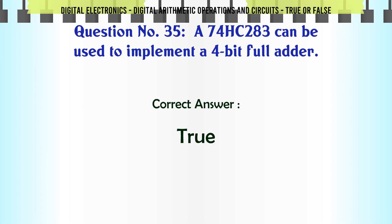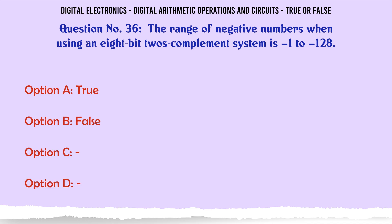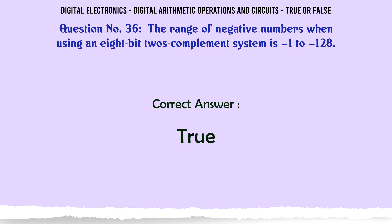The range of negative numbers when using an eight-bit two's complement system is -1 to -128. True or False? The correct answer is True.